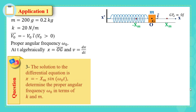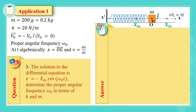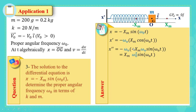Part three: the solution to the differential equation is given as x = −x_m·sin(ω₀t). We need to determine the proper angular frequency ω₀ in terms of k and m. To use this equation, we find its first derivative: x' = −x_m·ω₀·cos(ω₀t). Then the second derivative: x'' = x_m·ω₀²·sin(ω₀t). Now we can substitute back into the differential equation.